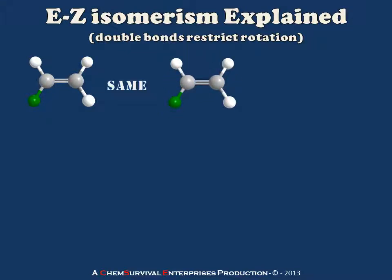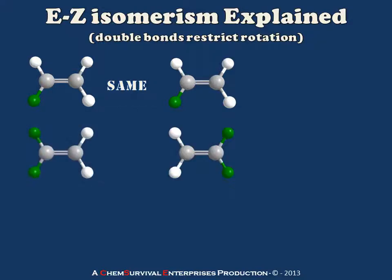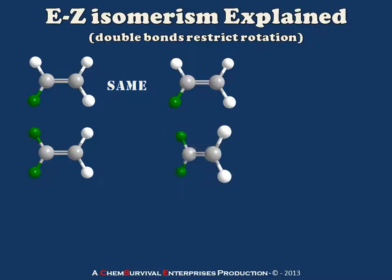I can in fact do this simply by rotating my new molecule, so you'll see that these are the same. If I go one level up in complexity and add two green substituents and two whites, again I can draw what may look like a different set of isomers, but all I have to do is rotate the molecule on the right and I've recreated the exact same molecule as on the left. So these don't have E-Z isomerism.